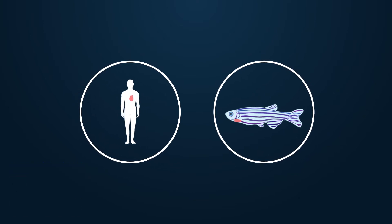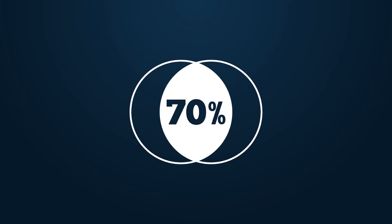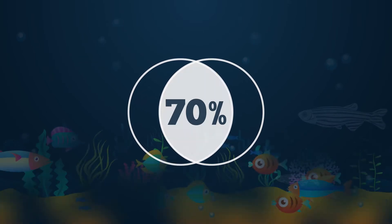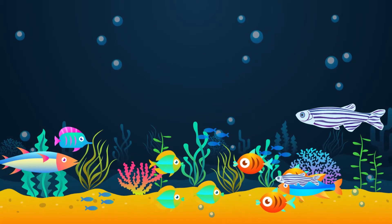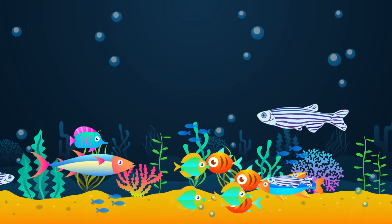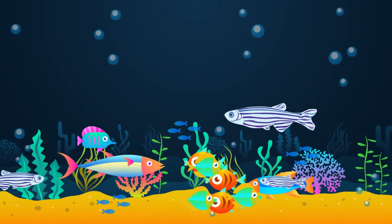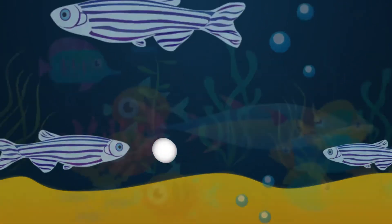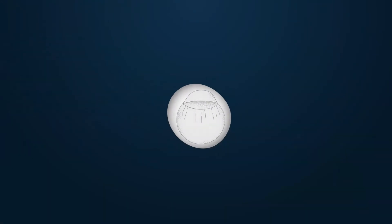In fact, 70% of zebrafish genes are the same as human. Zebrafish are easy and inexpensive to grow and maintain, and one zebrafish couple can produce more than 200 offspring per week.